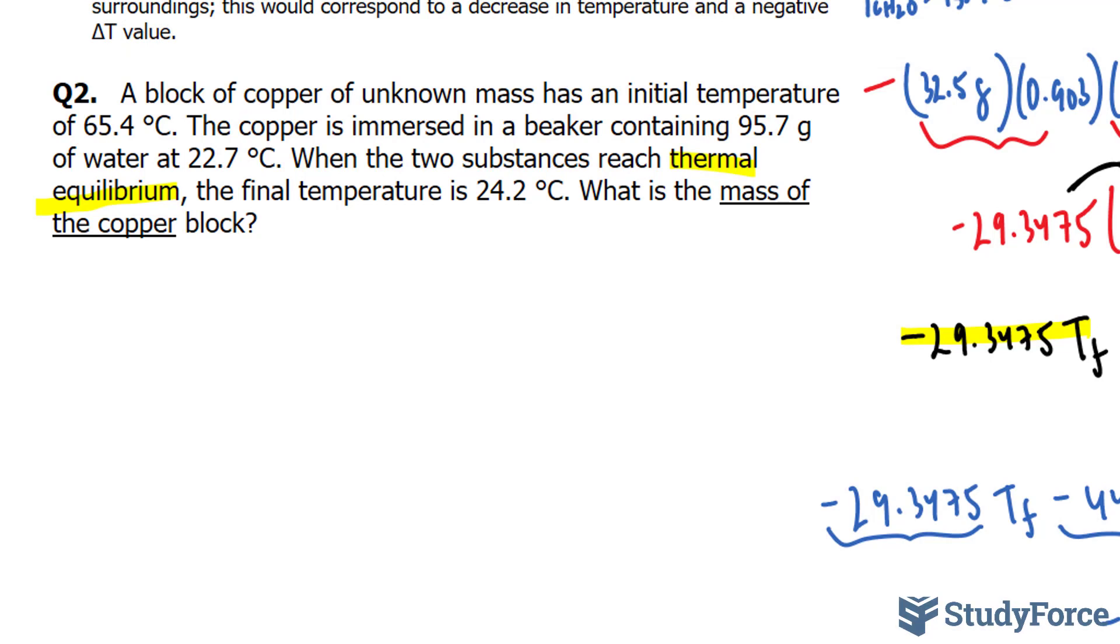And what's gaining its heat is the water. Since the system is composed of only copper and water, we can say that the heat loss of copper equals the heat gain of water. Algebraically, you can write this as Q sub copper is equal to negative Q sub H2O. It really depends on how you interpret this. The heat loss by copper is gained by water.